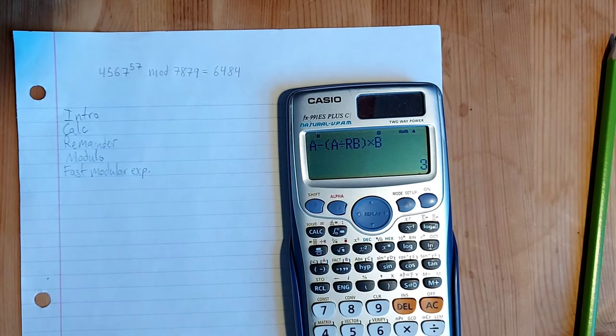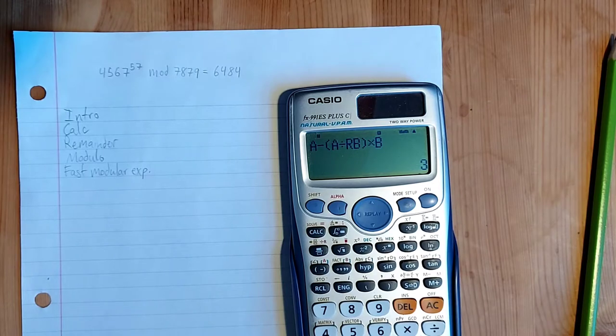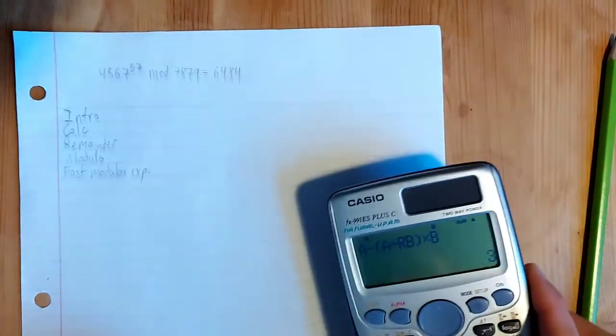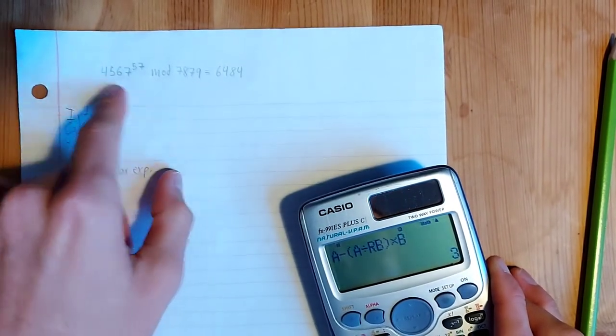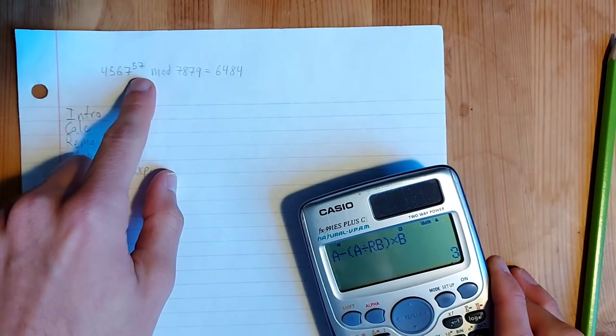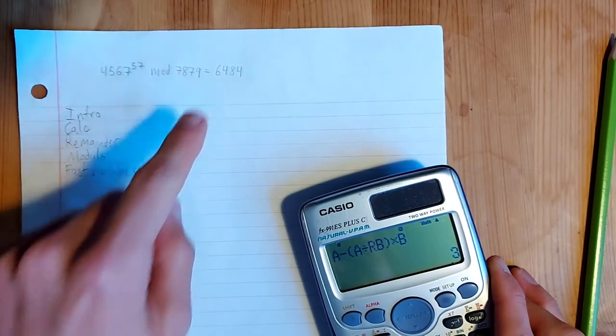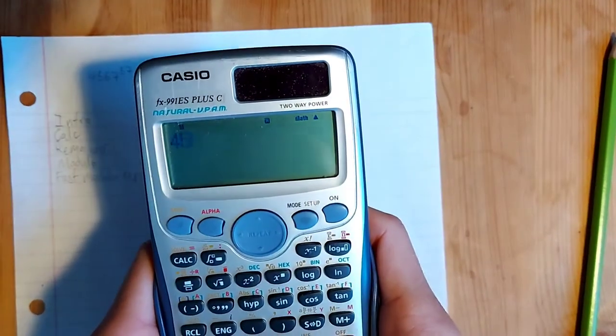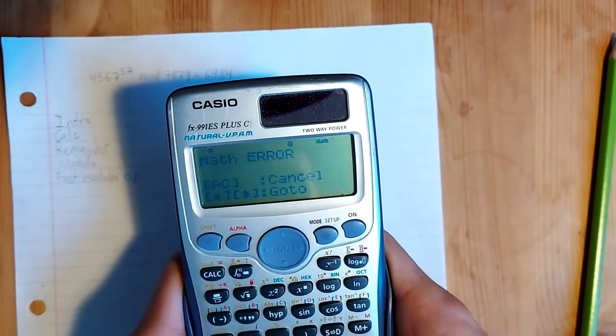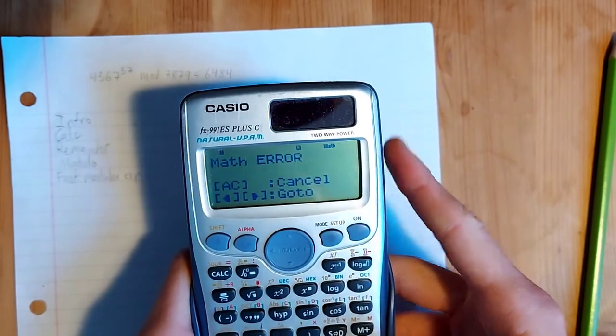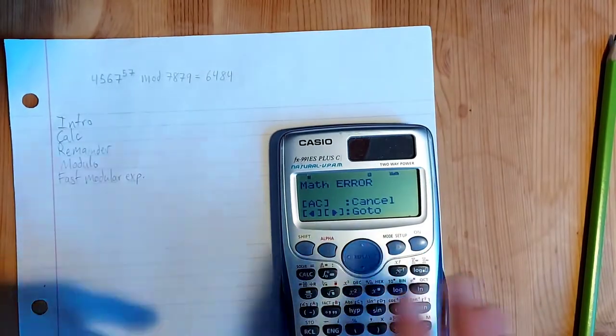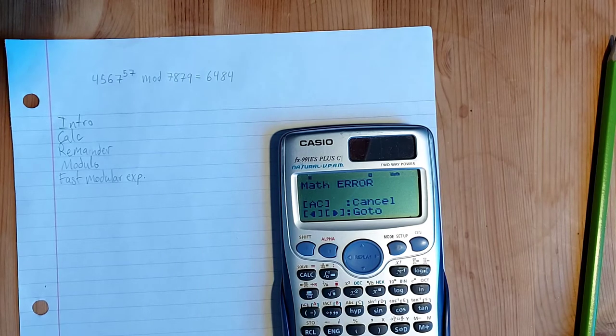Now the question is, how do we use that to perform a fast modular exponentiation? Because, for example, let's take this equation that I've put here, 4567 to the power of 57 mod 7879. So if we do 4567 exponent 57, it's going to give us a math error because that's way too big. So we need some way of dealing with this and I can't remember what the technique is called.